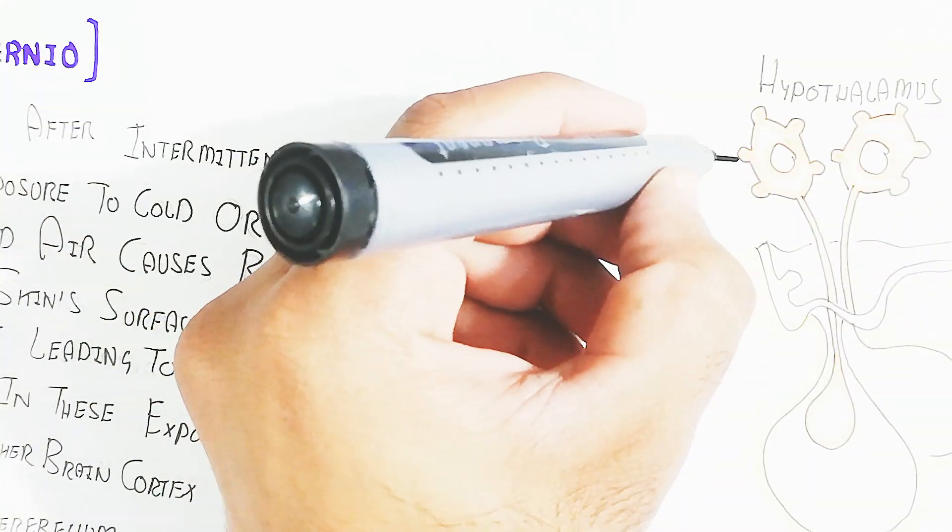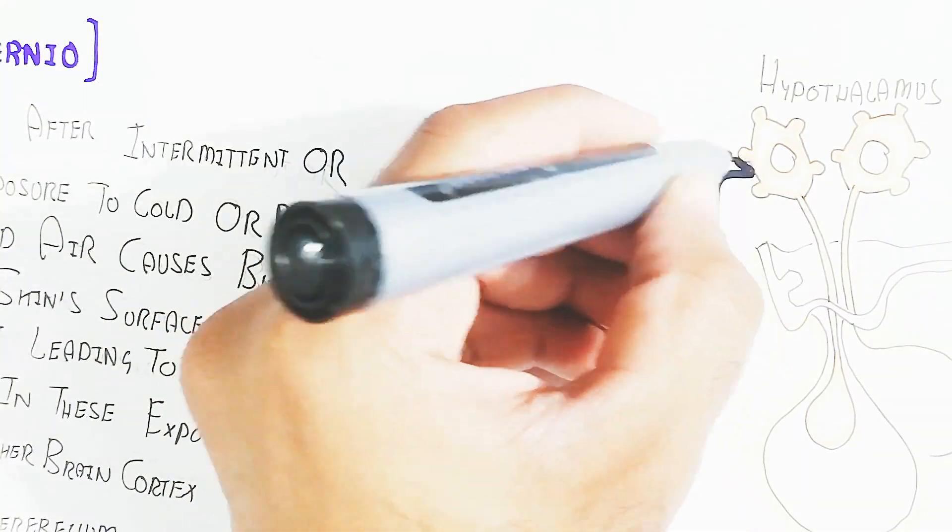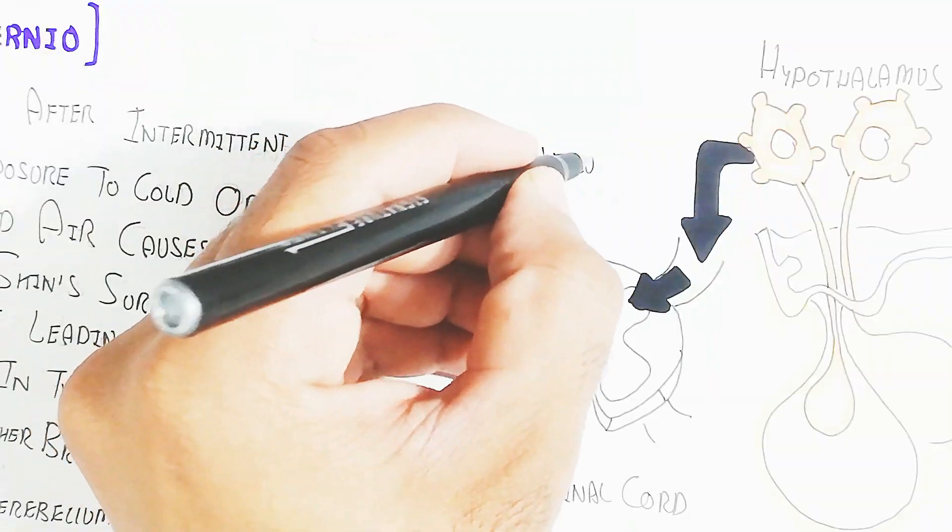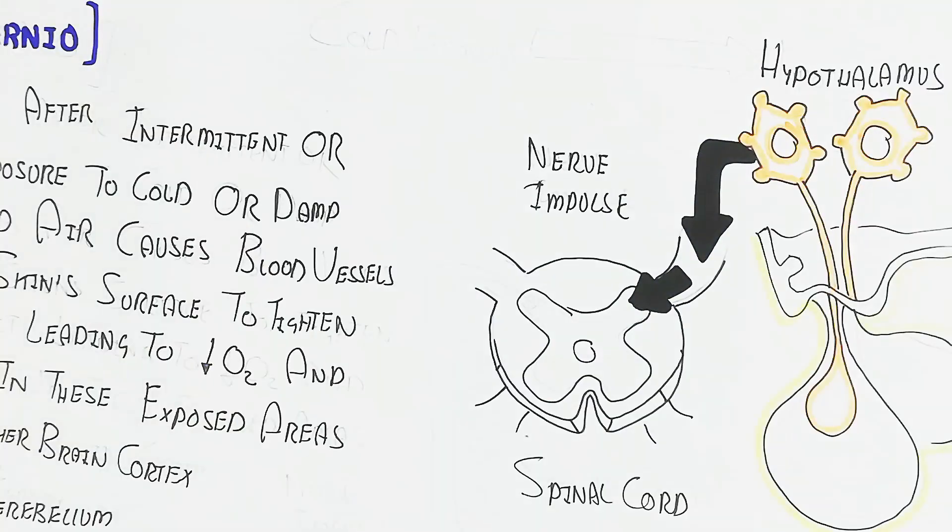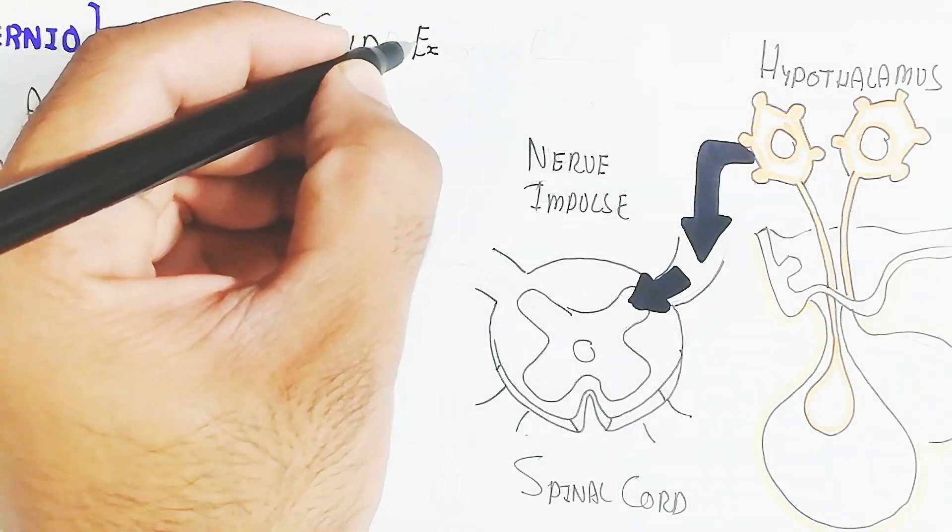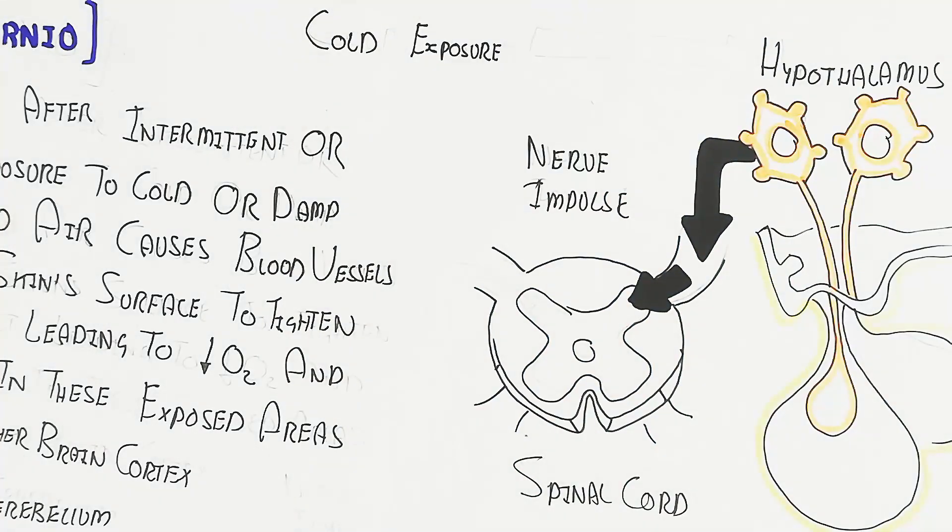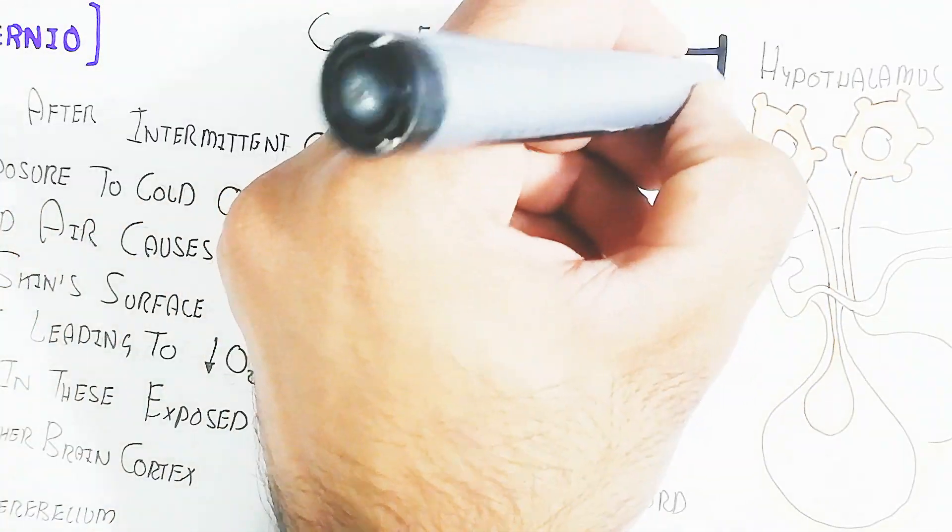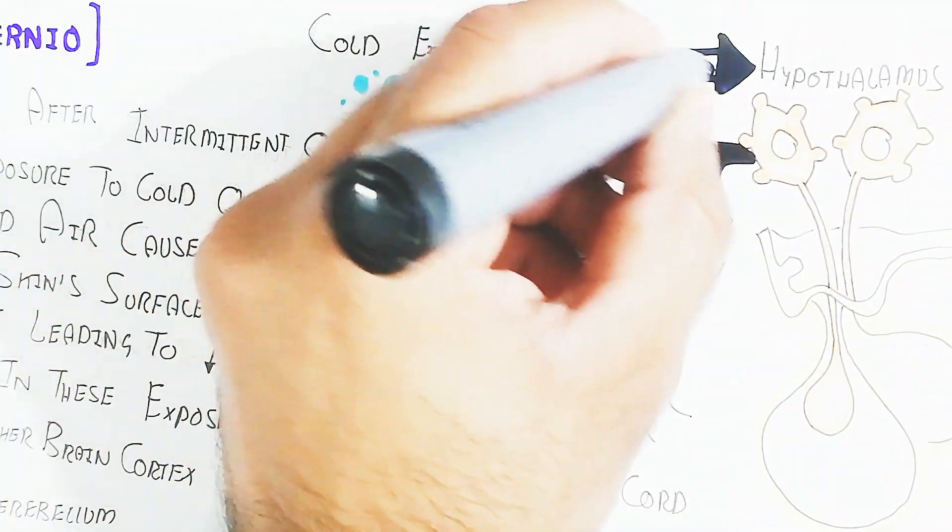While in this way, here is the hypothalamus and pituitary gland. The hypothalamus basically provides non-shivering thermogenesis or shivering thermogenesis. From the hypothalamus, the cold exposure will stimulate the hypothalamus to the central nervous system, and in this way this is the spinal cord.